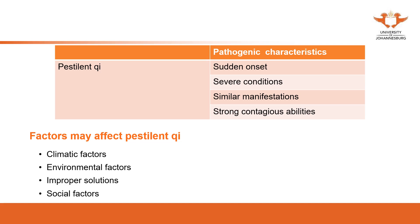Pestilence Qi, from the theories, can have the nature of coldness, fire, or summer heat — it depends on which kind of Pestilence Qi it is. It can be either one, or a combination. So we can't say all Pestilence Qi is considered coldness or fire, because it depends on the specific Pestilence Qi.